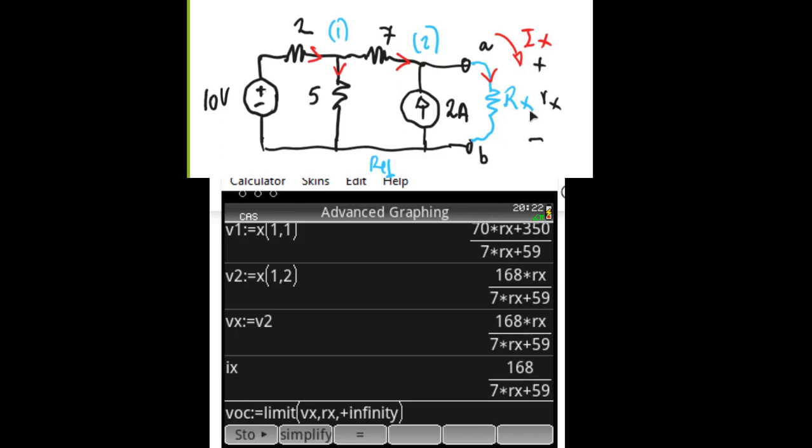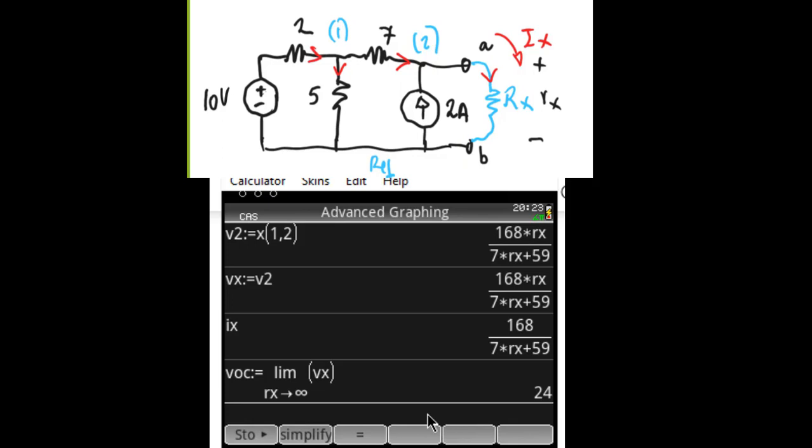But when Rx, this one, tends to infinity, it leaves an open circuit here. And Vx becomes the open circuit voltage, Voc. Voc is the limit of Vx as Rx tends to positive infinity. That is there. 24 volts. That is Voc.